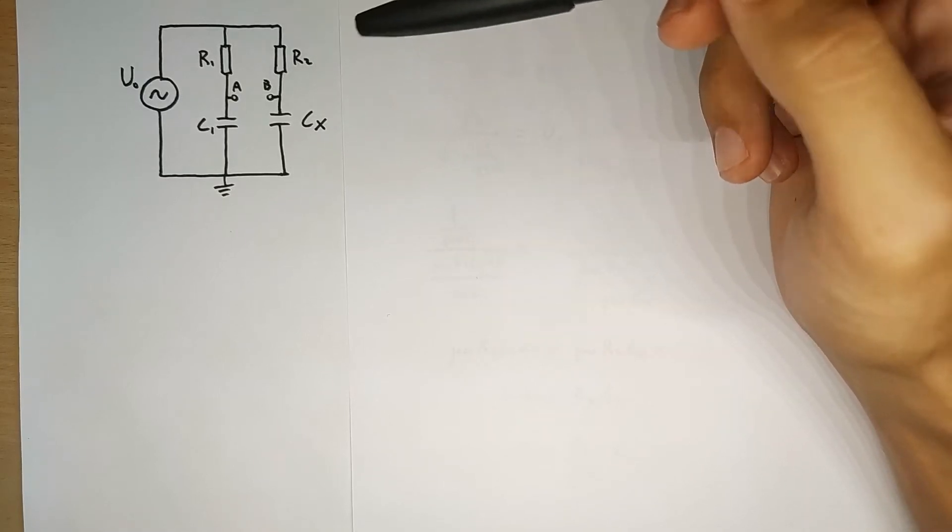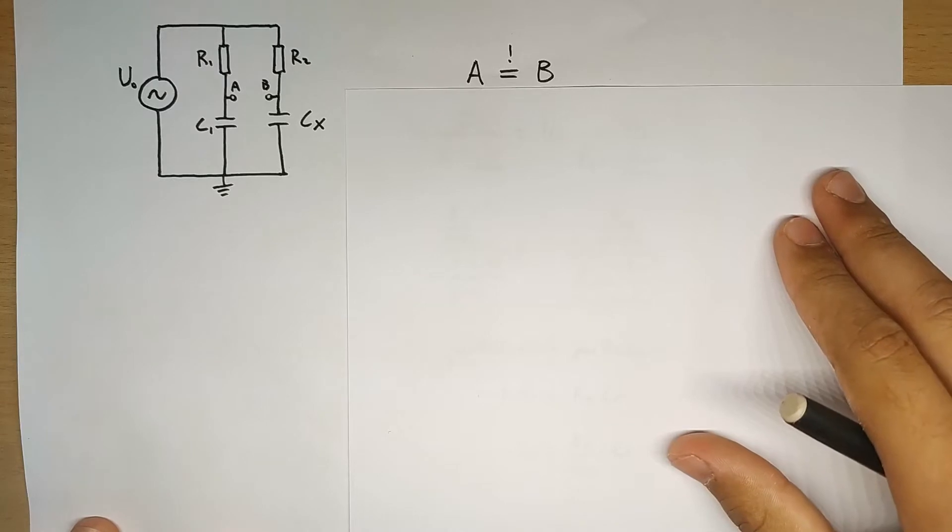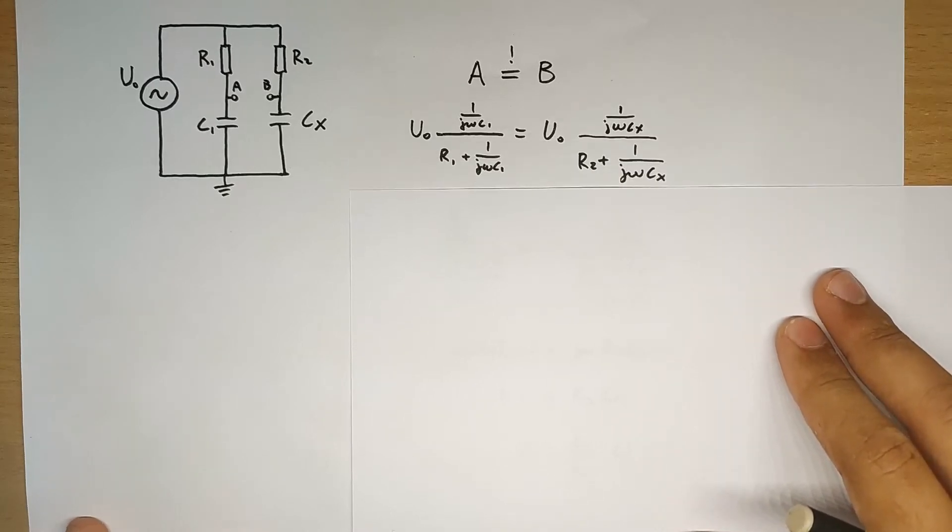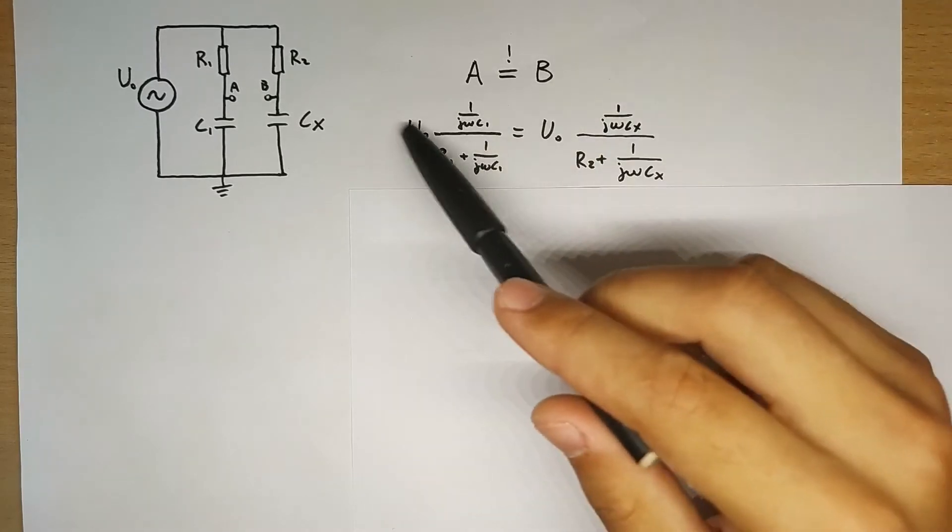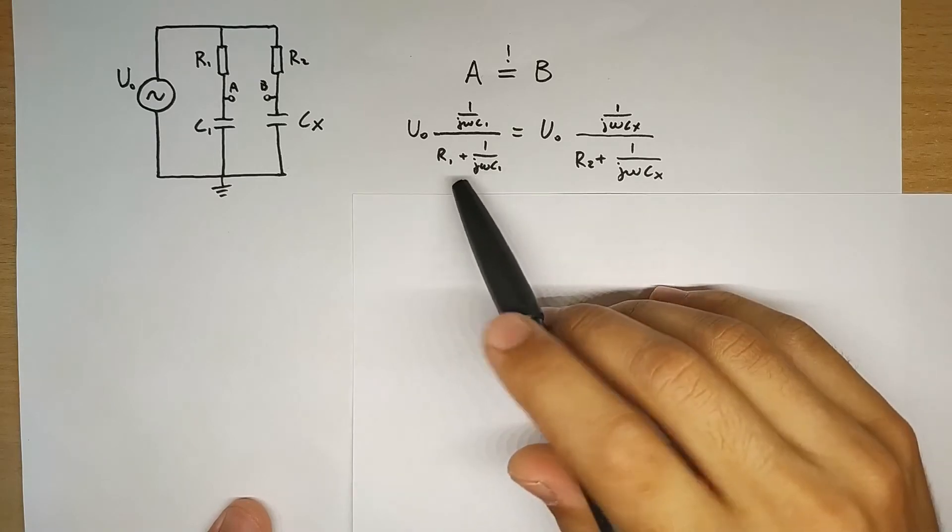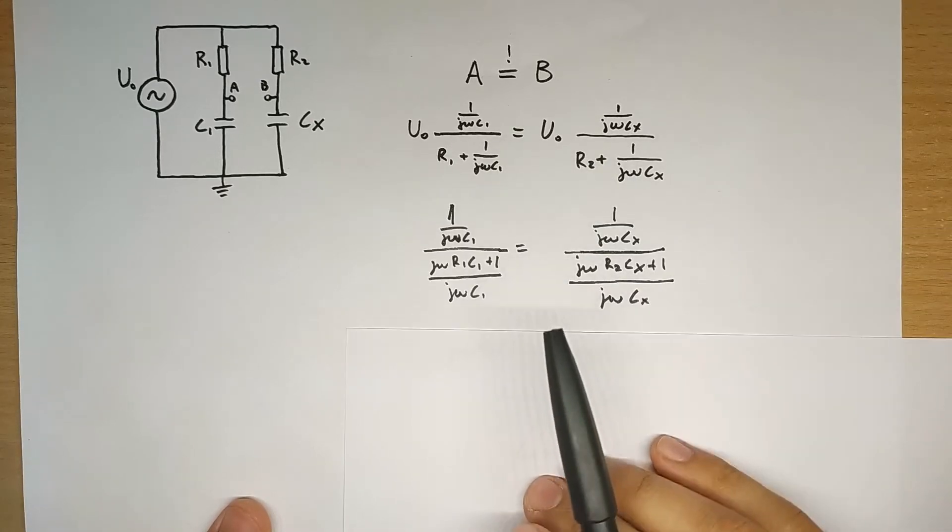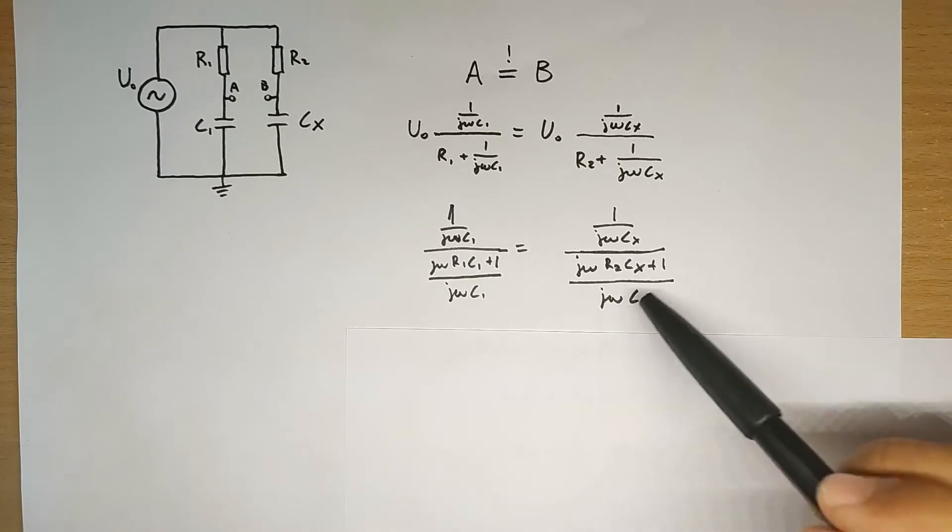So we can set A and B equal to each other. If we plug in the formula we find this, and we can simplify most of this. So take away U₀, and find common denominators for the two sides, we end up with this.